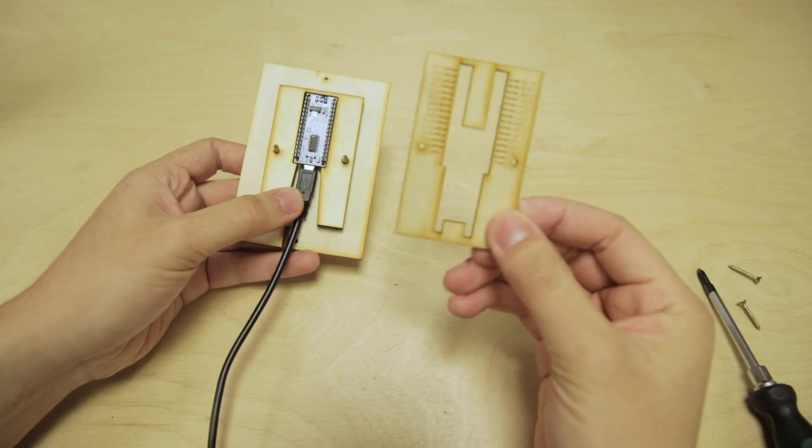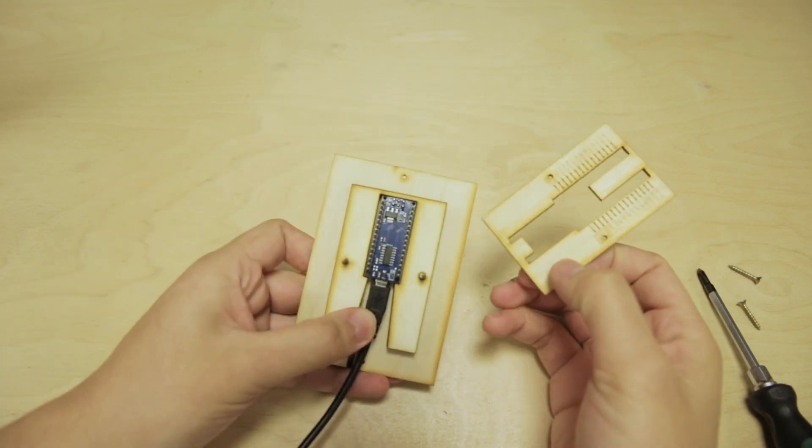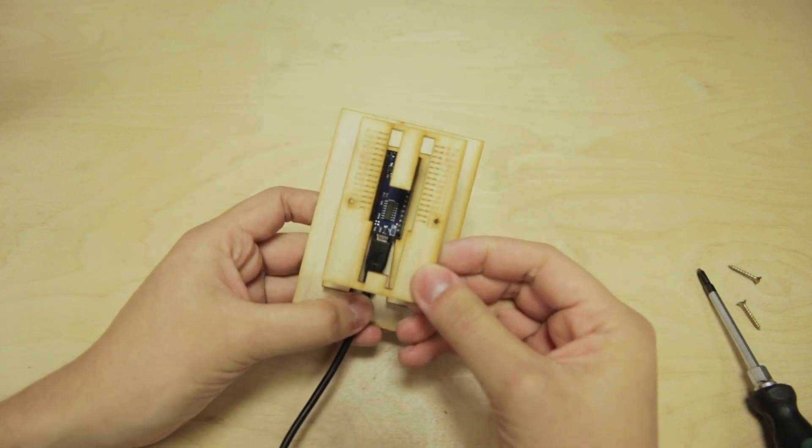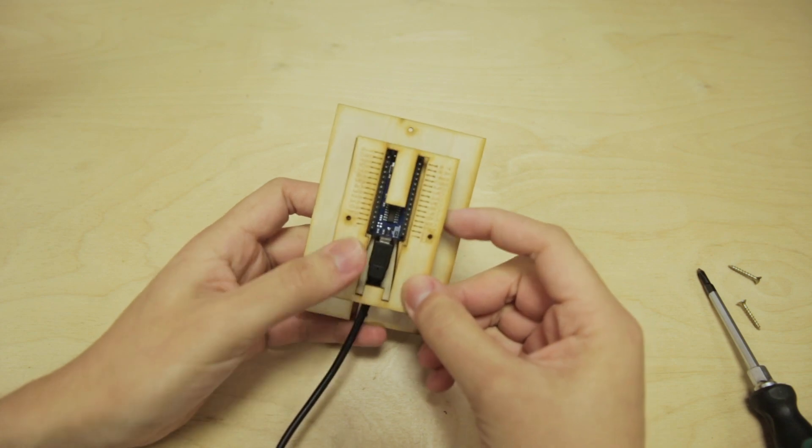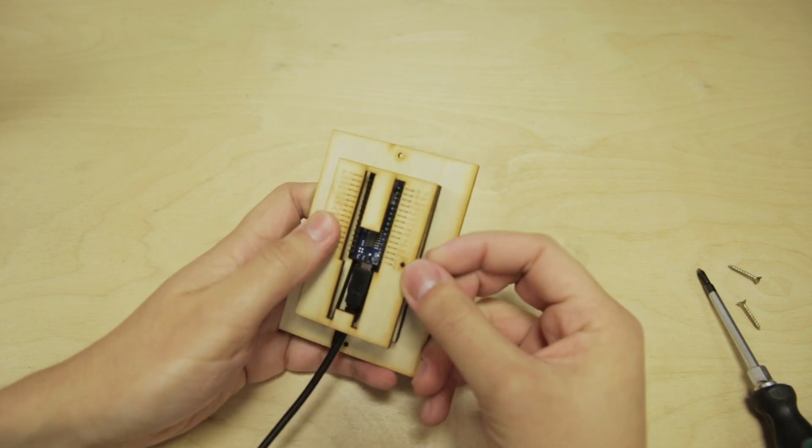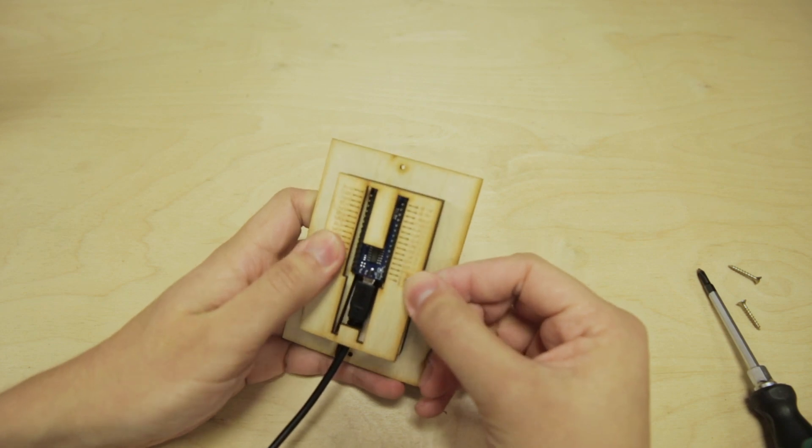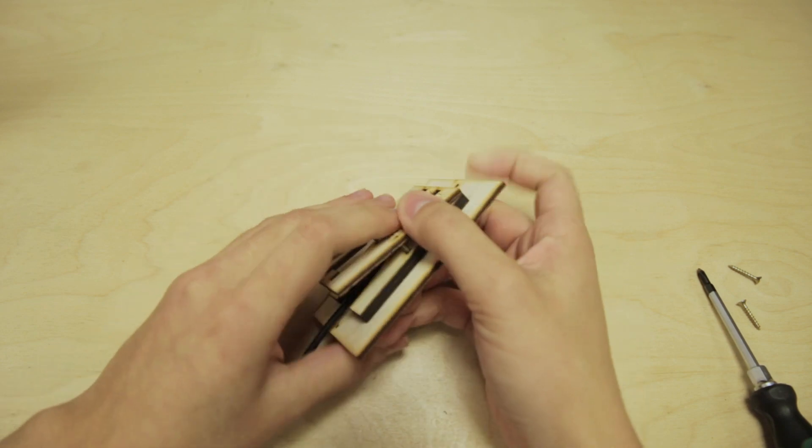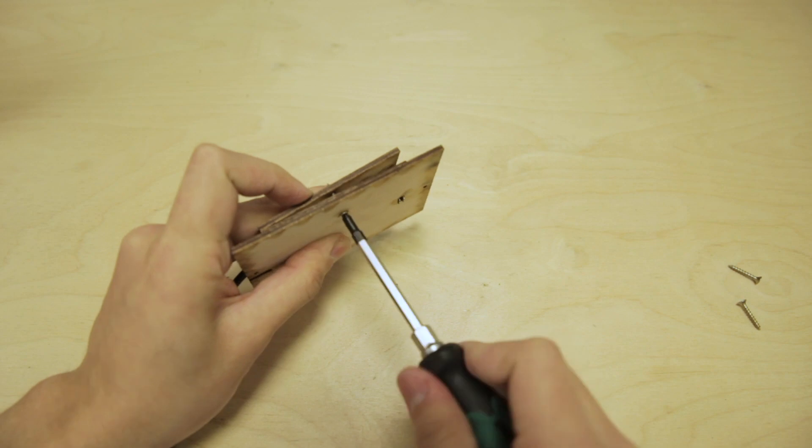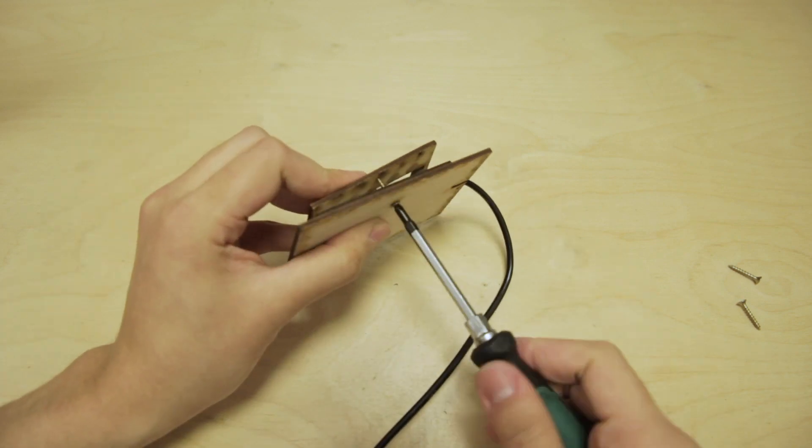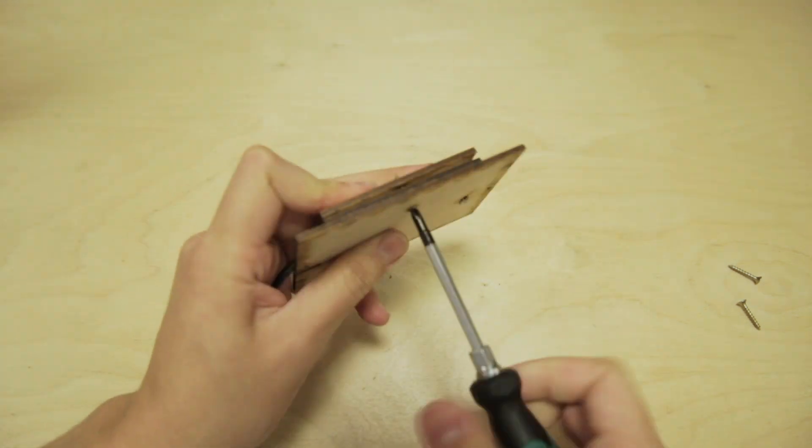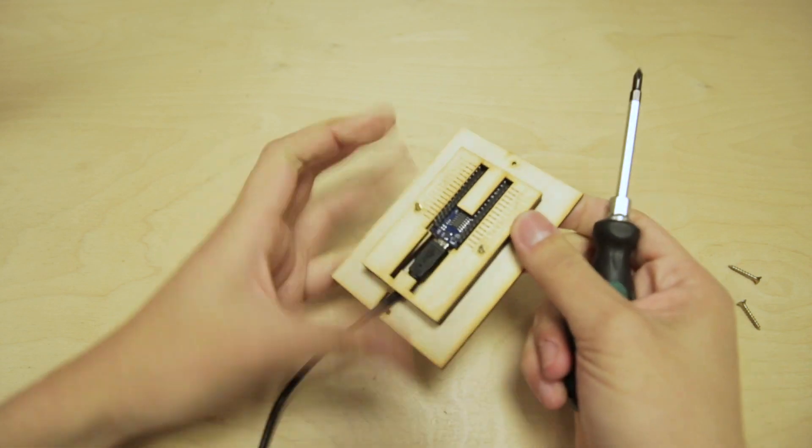Now take this other piece with the pin labels facing upwards and place it over top of the assembly you already have, again lining up the two holes with the screws. Hold that in place and tighten it with the screwdriver. There you have it. We're going to set that aside for now.